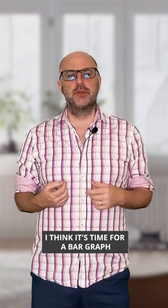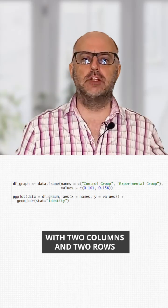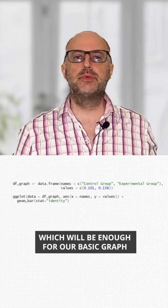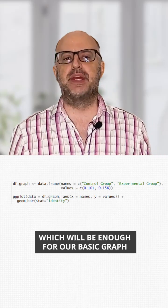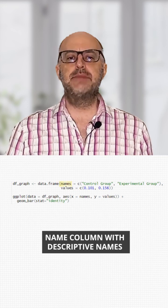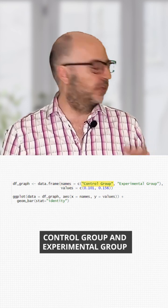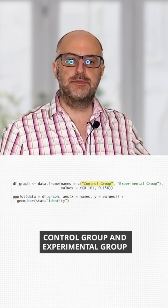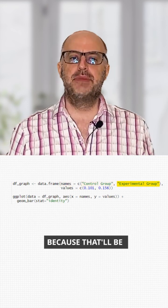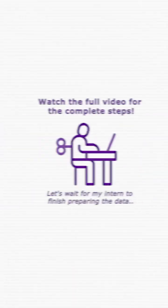What about the share out? I think it's time for a bar graph. We've created a basic data frame with two columns and two rows, which will be enough for our basic graph. We went ahead and created a names column with descriptive names — control group and experimental group — because that'll be easier to graph in a minute.